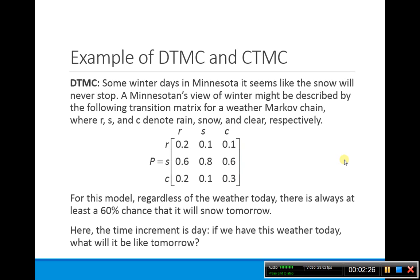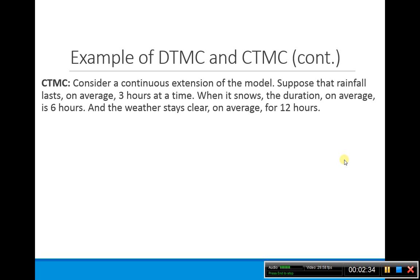Now let's think about how to make the same scenario a continuous time Markov chain — a continuous extension of the model. Here we're adding time in. It's not that it rains one day and snows the next; instead, if it rains, you expect rainfall to last a certain amount of time on average. We'll suppose that rainfall lasts on average three hours, snow lasts on average six hours, and clear weather lasts on average twelve hours.